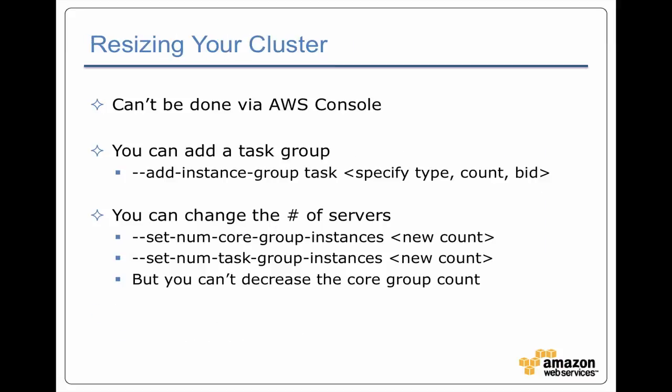Using the command line client, you can do --instance-group task, which lets you set up a group running just task trackers. To dynamically resize, you use --add-instance-group with task or core and specify the count, type, and bid price. You can increase the core group count, but be careful about decreasing it — decreasing the core group removes servers that have blocks of data stored on them, so you can lose data.